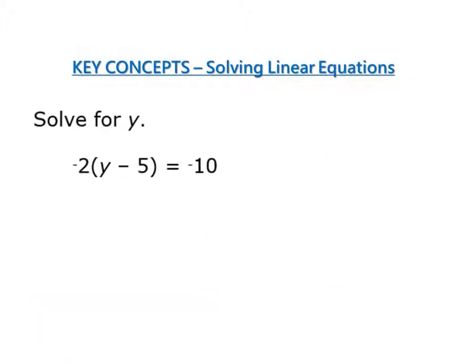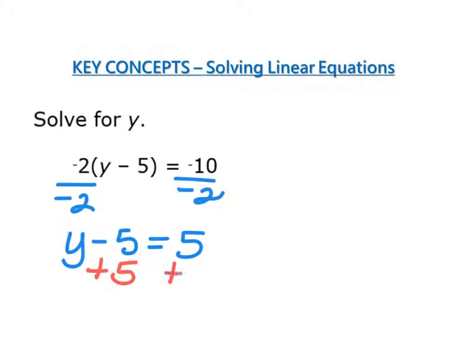In this problem solving for y, I have negative 2 outside a set of parentheses. I can do this one of two ways. I can do the distributive property, multiplying negative 2 times everything that's in parentheses, or if possible, I can take the negative 10 and divide it by negative 2. Well, I can do that evenly, so let's do that first. I'm going to divide both sides by negative 2, and I'm left with y minus 5 equals 5. Then I just have one number minus 5, so I'm going to do the opposite and do it to both sides. That gives me y equals 10.